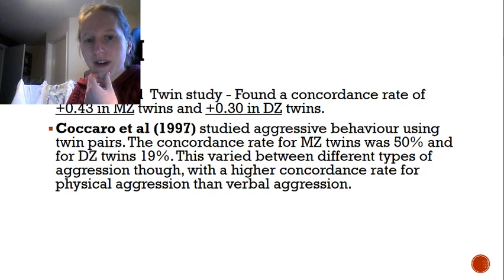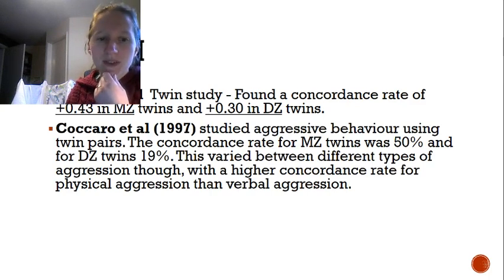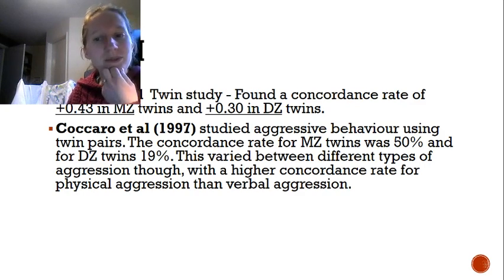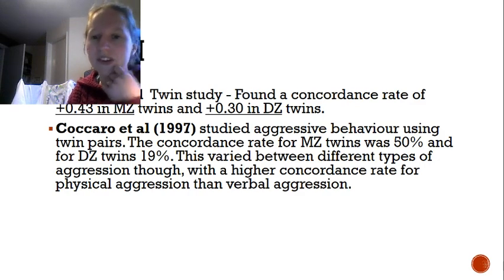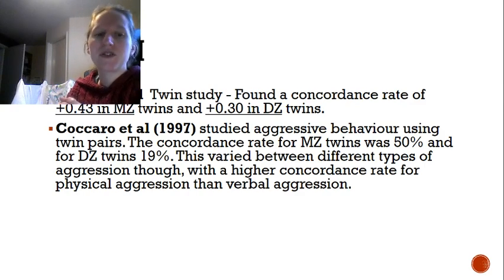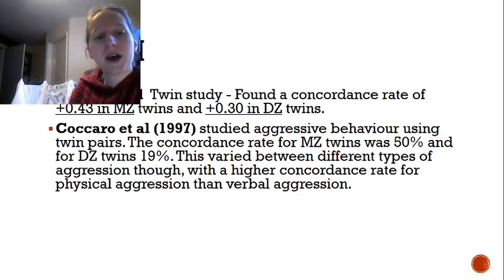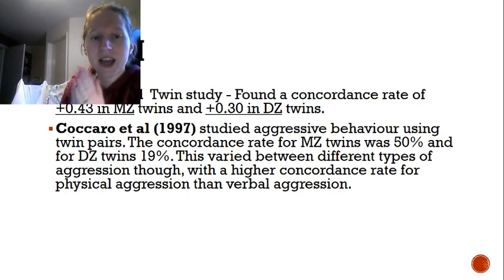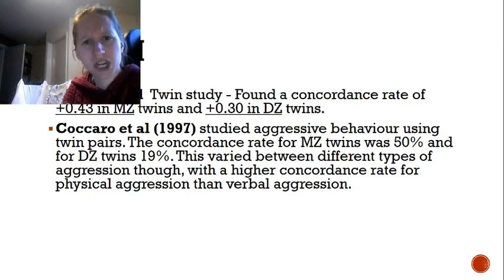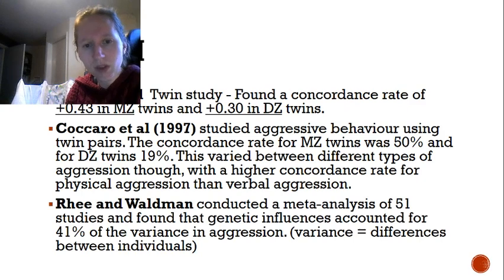The next study is Coccaro et al., who studied aggressive behaviors in twin pairs and found a much more significant difference. The concordance rate for MZ twins was 50% and for non-identical twins 19%, suggesting a bigger genetic component than the other study, because there's quite a large disparity between those two figures. They also looked at different types of aggression and found a higher concordance rate for physical aggression — direct attacks — compared to verbal aggression. This is quite a key study suggesting a fairly strong genetic component to aggression.